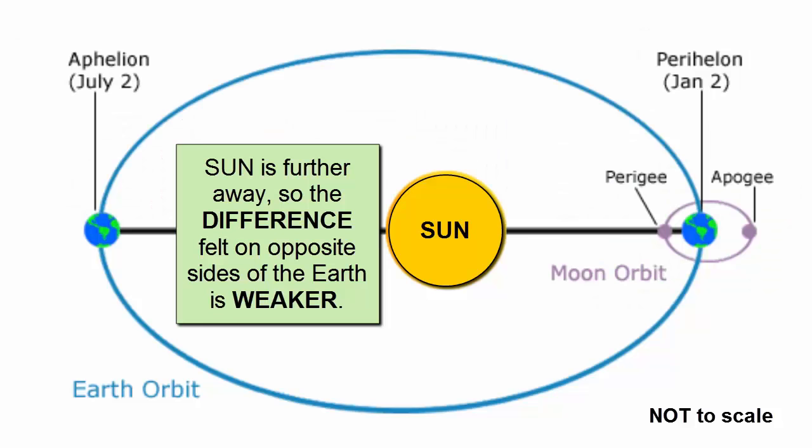The Sun is a much more massive body than the Moon. However, because it is so far away from the Earth, the differences experienced on the near and far sides are much, much smaller than those produced by the Moon.